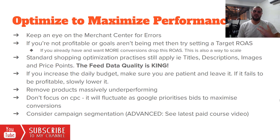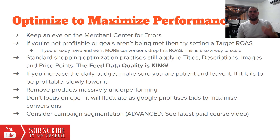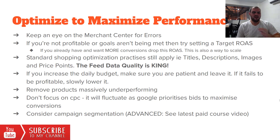If you increase the budget, be patient and leave it. Everything with Google requires patience. If your campaign fails to be profitable, slowly lower the budget — that's about the only control you've got with smart campaigns. Remove products that are underperforming. Don't focus on cost per click with smart; instead, watch your conversion value and your return on ad spend. The metrics I'd really look at are: number of conversions, conversion value, and return on ad spend.